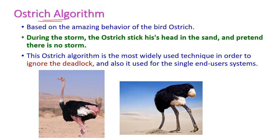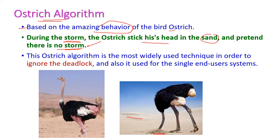The ostrich algorithm is based on the amazing behavior of the bird ostrich. During a storm, the ostrich bird sticks its head into the sand. When a storm comes, the ostrich hides its head and then assumes that there is no storm. Based on this behavior, the ostrich algorithm was developed. It is the most widely used technique to ignore deadlock, and it is used maximum in single end-user systems.